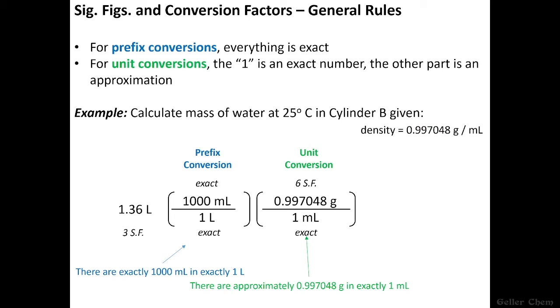So the proper interpretation of this conversion factor right here is that there are approximately 0.997048 grams in exactly one milliliter. So that's what I mean up here when I say for unit conversions, the one is considered to be an exact number, but the other part is an approximation. It's ultimately a measurement. There is the rare exception where a unit conversion has both numbers as being exact, but in general go with this rule here.